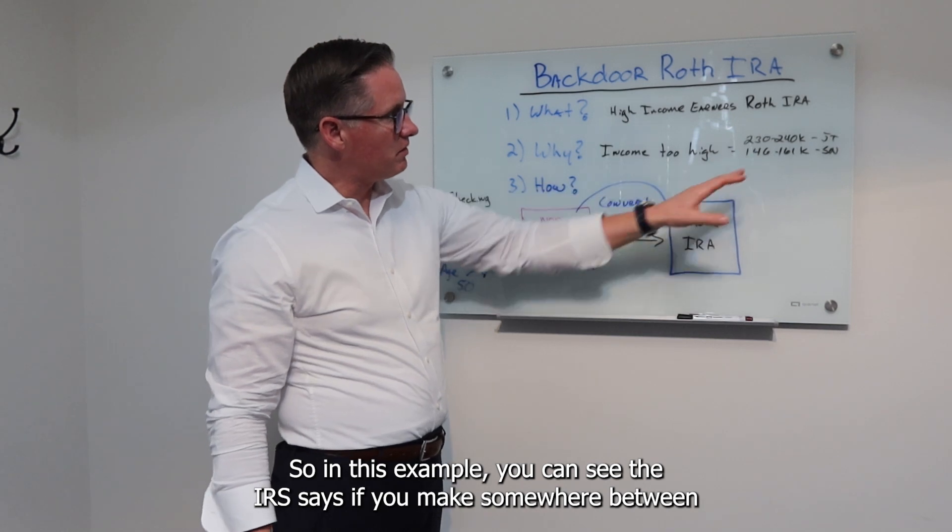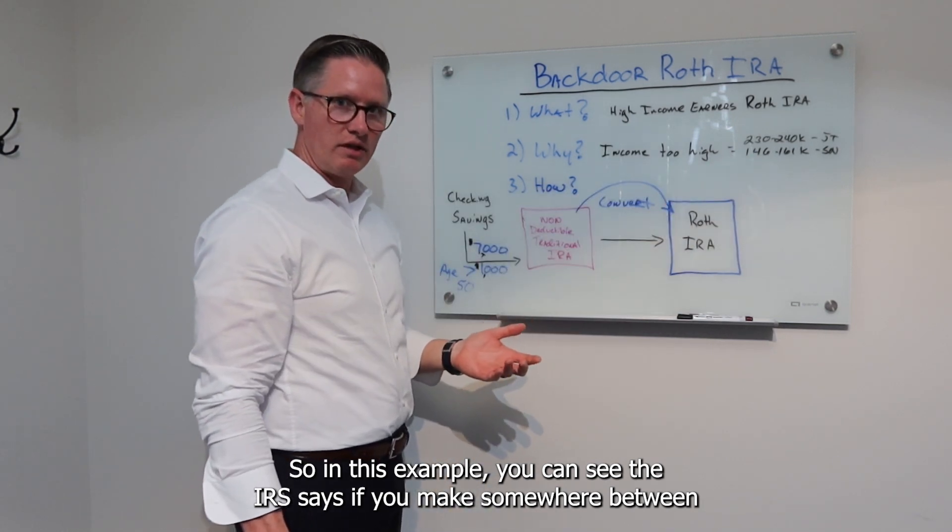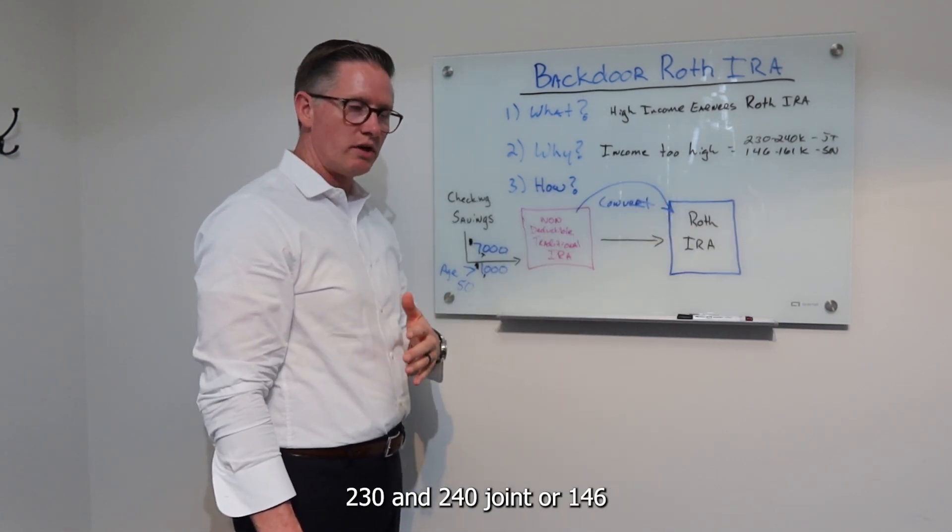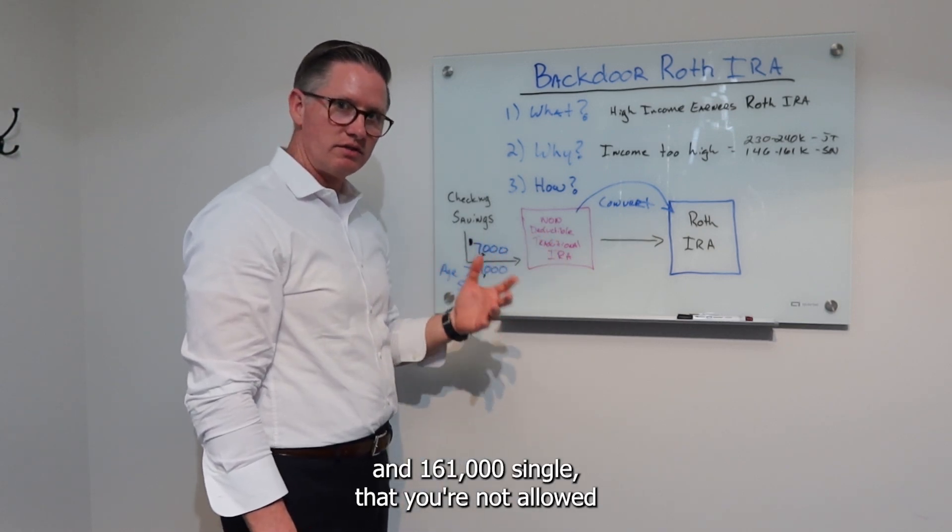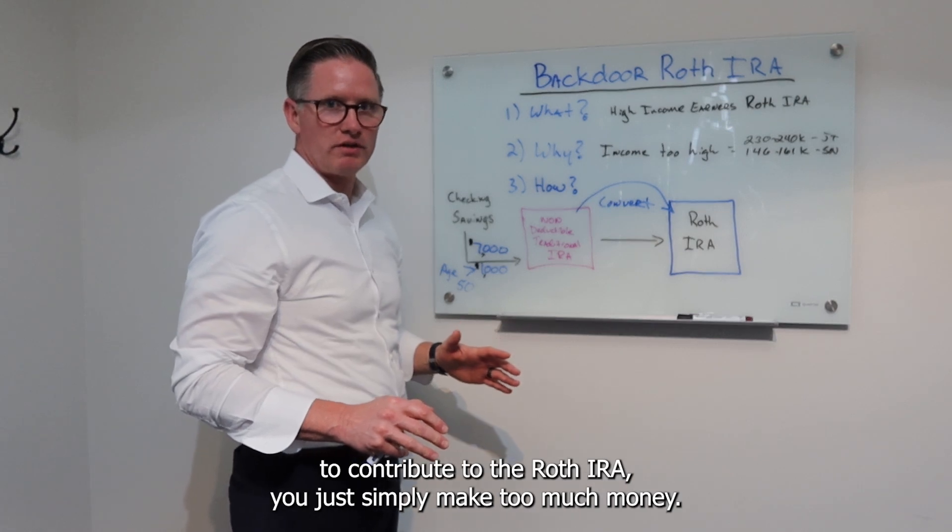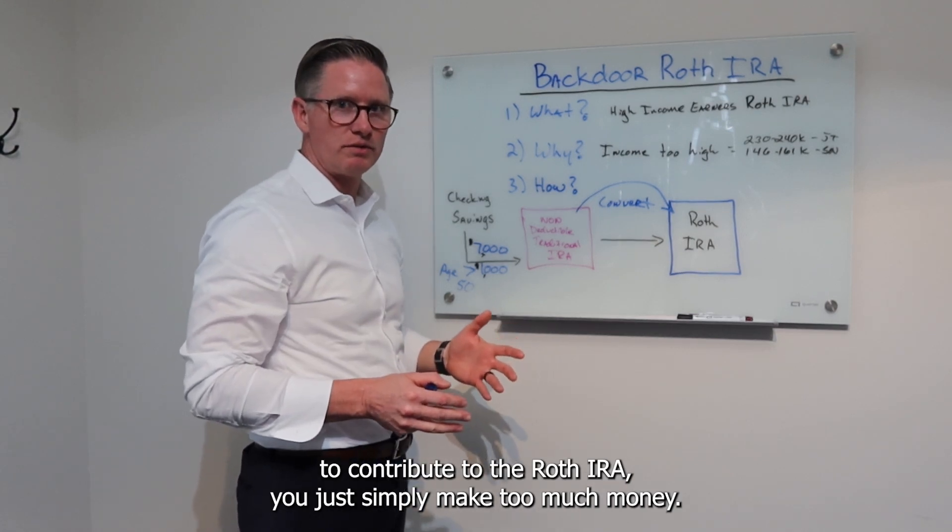So in this example you can see the IRS says if you make somewhere between $230,000 and $240,000 joint or $146,000 and $161,000 single, that you're not allowed to contribute to the Roth IRA. You just simply make too much money.